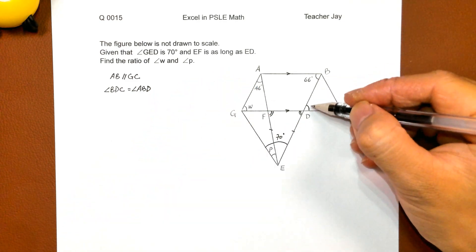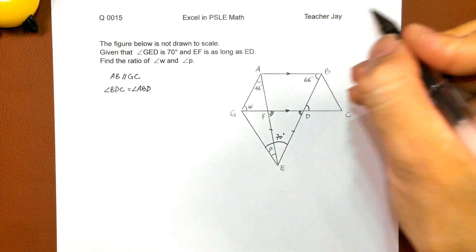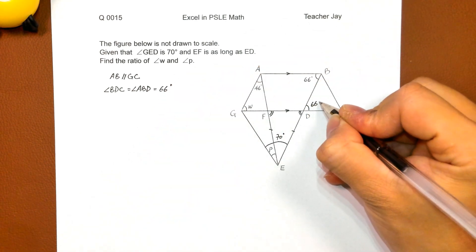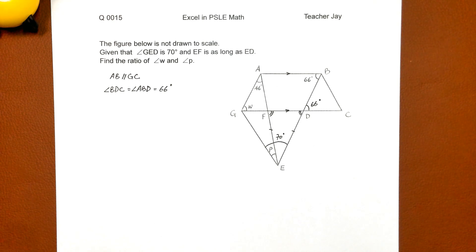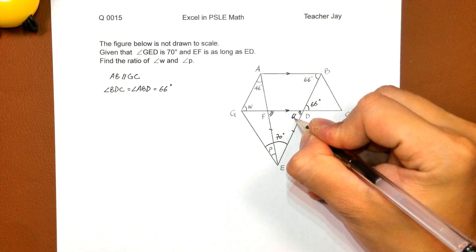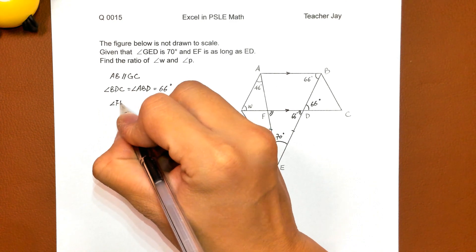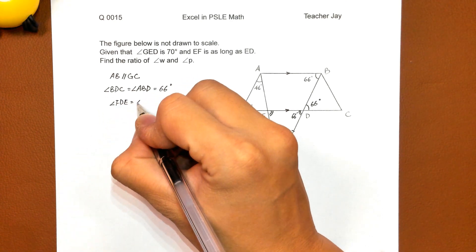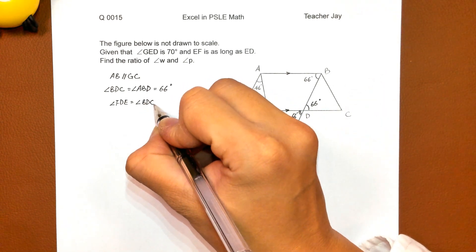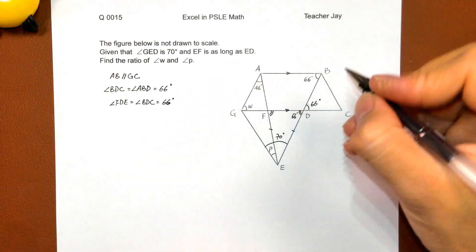These two are alternate angles. So 66, 66 here. And of course, this angle also 66, angle FDE, equals angle BDC. 66, 66, 66.